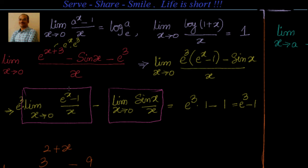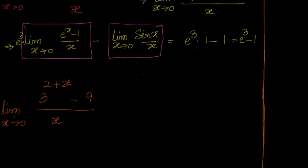Once you look at the problem, you have to understand which formula to use. First, what are the functions in the problem? They are exponential and trigonometric. What are the formulas for trigonometric? What are the formulas for exponential? If you cannot directly use them, how do you manipulate? Here, because there is e³, I have to factor it out — take it common — and then I can see we are in the required form. Let's go to the next problem.